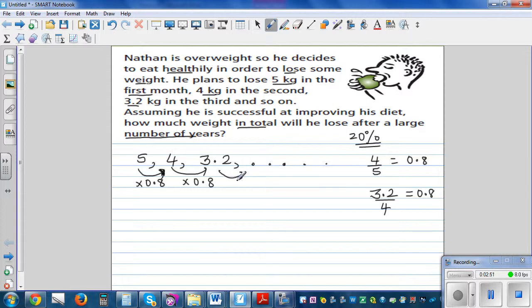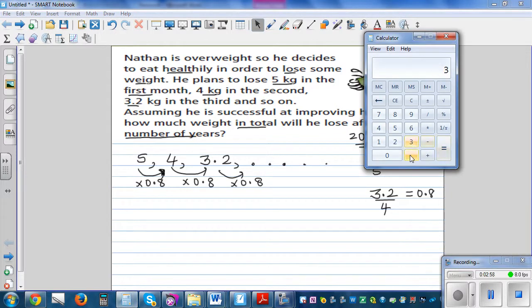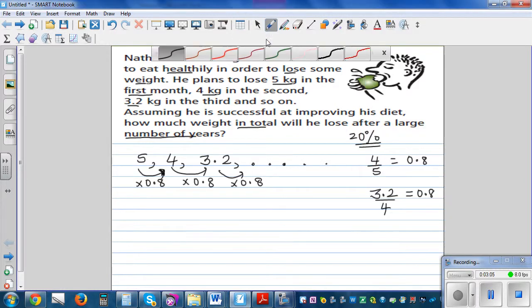3.2 times 0.8. He wants to lose 2.56 kg. And again you can check this, 2.56 divided by 3.2 would be 0.8. Okay, so what do we know? We know a is 5 and r is 0.8.